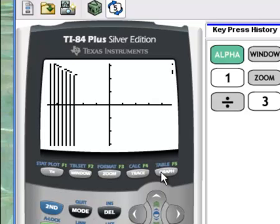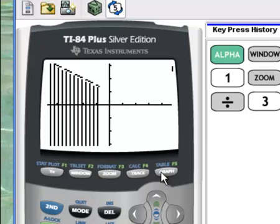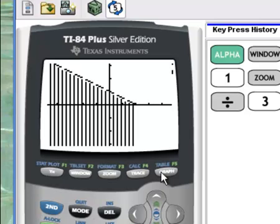And again, it's going to take a little bit of time for this to graph. So there is our first function, Y less than negative one half x plus one.